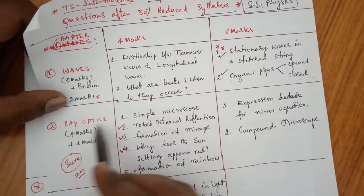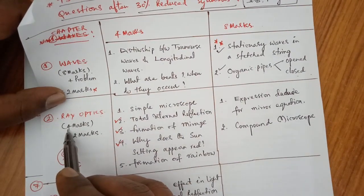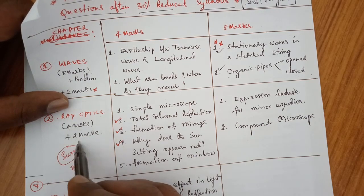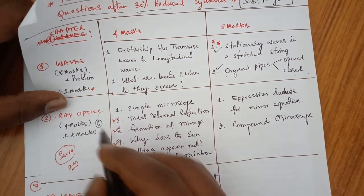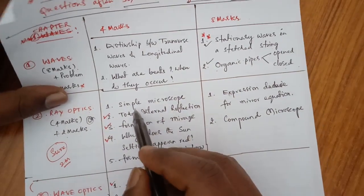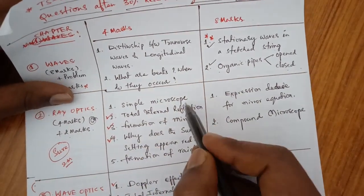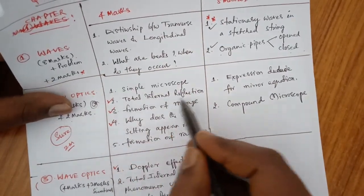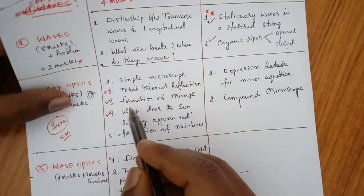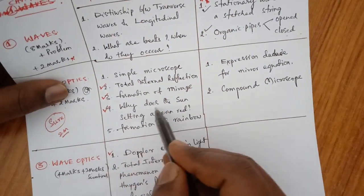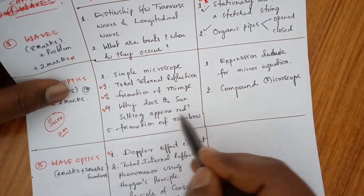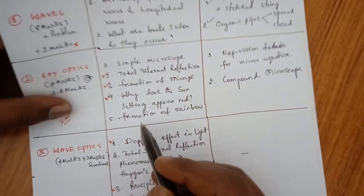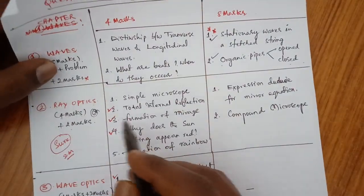Second chapter is Ray Optics and Optical Instruments. It carries only 4 marks — sometimes 2 marks as well — so the total weightage here is 6 marks. For 4 marks: simple microscope is very, very important; total internal reflection — what is critical angle, explain total internal reflection; formation of mirages; why does the setting sun appear red — this is very, very important; and formation of rainbows.